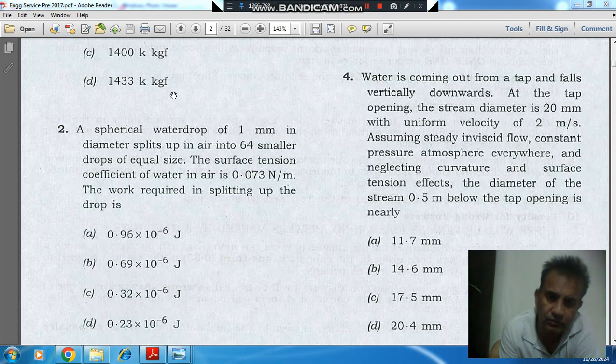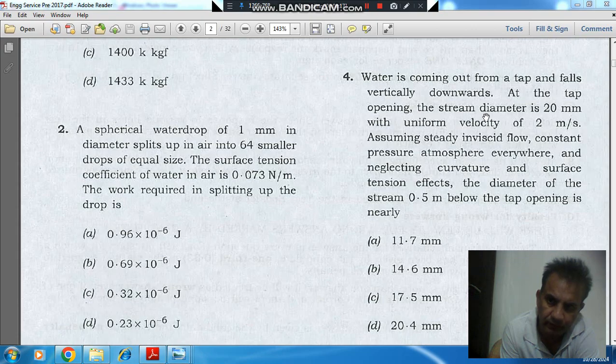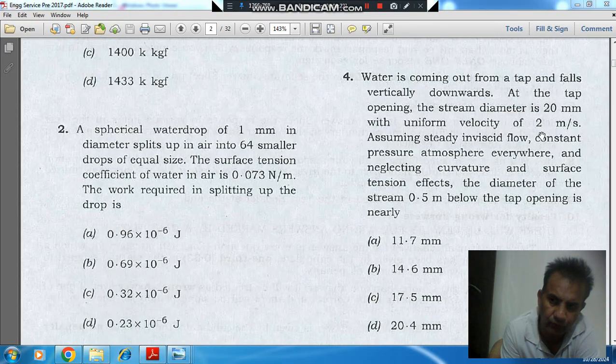Hello, welcome again. We are solving Engineering Mechanics 2017 paper, question number 4. Water is coming out from a tap and falls vertically downwards. At the tap opening, the stream diameter is 20 mm with uniform velocity of 2 meter per second.